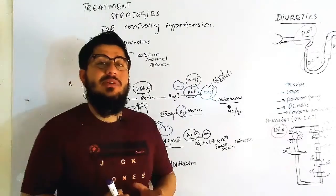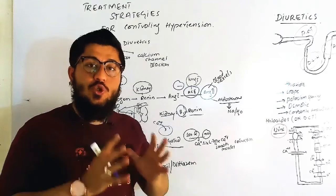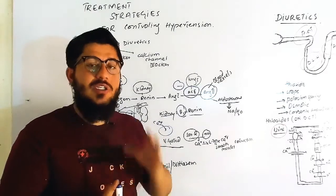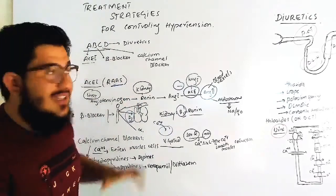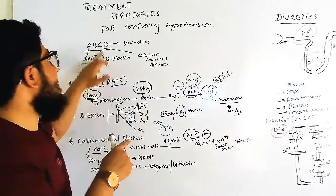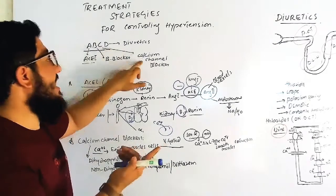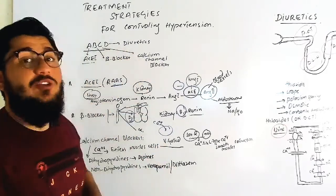ABCD is a mnemonic to remember the drugs used to control hypertension. A stands for angiotensin converting enzyme inhibitors, B stands for beta blockers, C for calcium channel blockers, and D for diuretics.